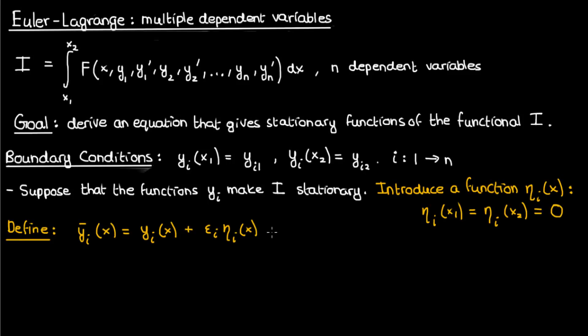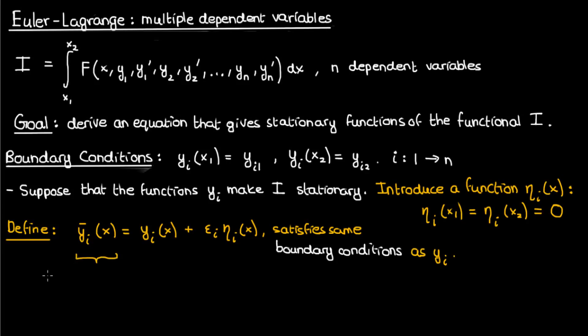Essentially, yi bar represents a variation in the extremal yi, and because eta_i is an arbitrary function you can conclude that by extension yi bar can also represent any arbitrary function. The only restriction on yi bar arises from the restrictions we put on yi and eta_i earlier, related to the boundary conditions. Because of the parameter epsilon and the arbitrary function eta, yi bar can be interpreted as representing a whole family of curves.